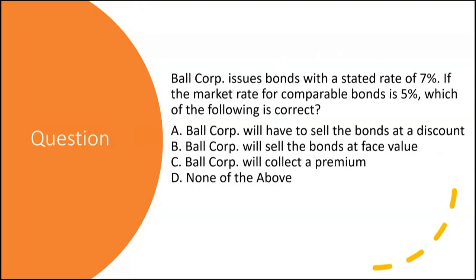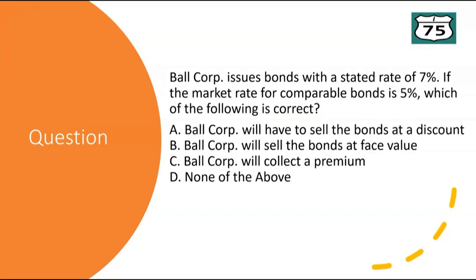Ball Corp issues bonds with a stated rate of 7%. If the market rate for comparable bonds is 5%, which of the following is correct: Ball Corp will have to sell the bonds at a discount, Ball Corp will sell at face value/par, Ball Corp will collect a premium, or none of the above? Think you know — leave the answer in the comments section.